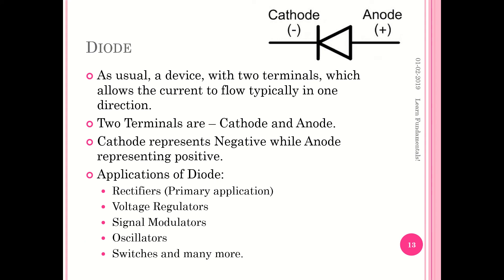A diode is a two-terminal device and it has got cathode and anode. Cathode refers to the negative terminal, anode refers to the positive polarity. It is a device which will allow the current to flow typically in one direction — the cathode is always negative, remember it. Applications of the diode include very importantly the rectifiers: half wave rectifiers, full wave rectifiers. Voltage regulators, signal modulators, oscillators, switches, and many more applications are there fundamentally for the diodes.